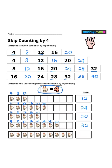4, 8, 12, 16, 20, 24, 28, 32, 36, 40. Total is 40. 4, 8, 12, 16, 20, 24.